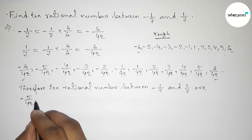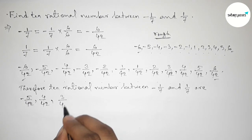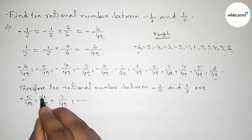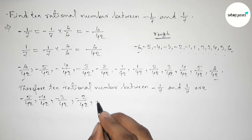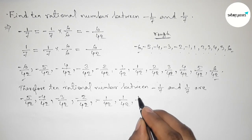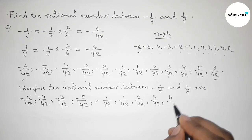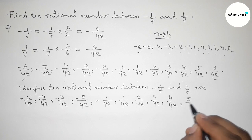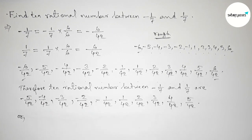So the required rational numbers between minus 6 by 42 and 6 by 42 are: minus 5 by 42, minus 4 by 42, minus 3 by 42, minus 2 by 42, minus 1 by 42, then 1 by 42, 2 by 42, 3 by 42, 4 by 42, then 5 by 42. Again, we can simplify these.